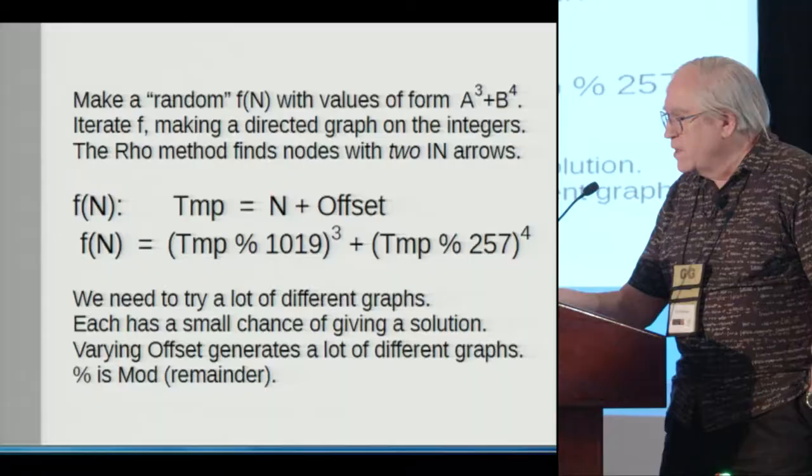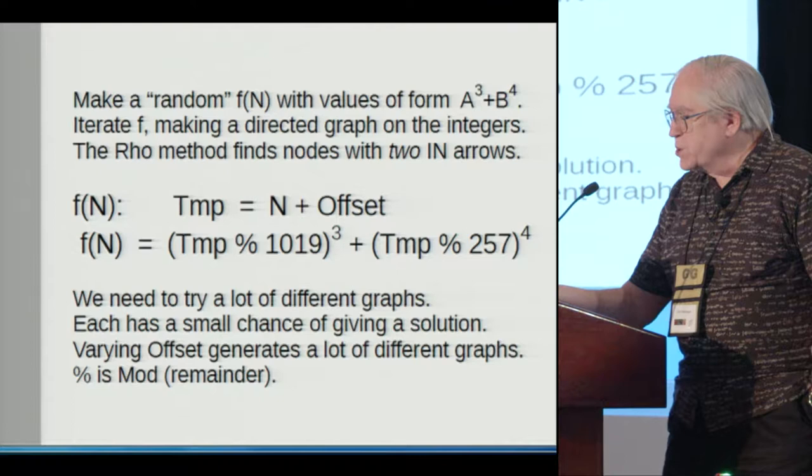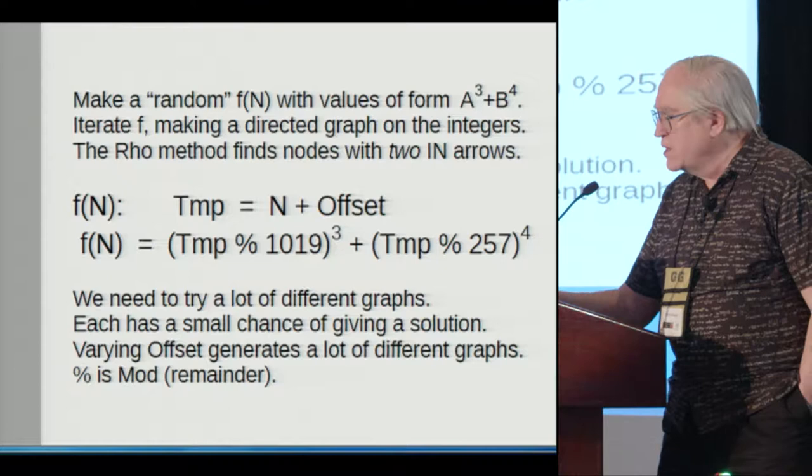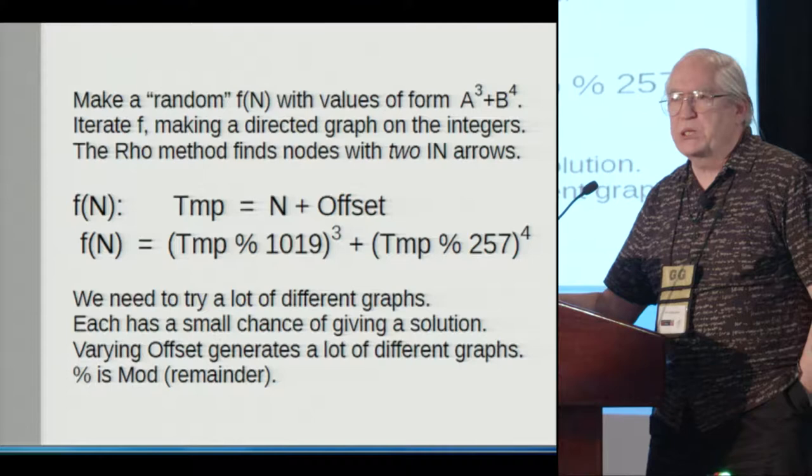And for my f, my function f, I've chosen to make it this number temp modulo 1019 and modulo 257. Those are somewhat random functions of temp. And you cube them, take the fourth power, add them together. And then this magic number offset allows me to get a bunch of different results by only changing offset.